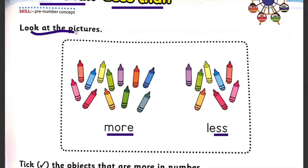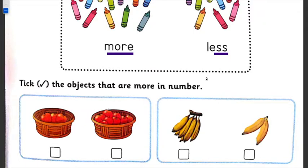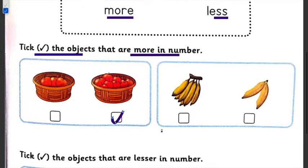Look at the pictures first — more, less. If you can count, it will be fine, but you will find more and less. Now you just have to check which is more and which is less. You have to read the statement: tick the objects that are more in number. Here we have three apples — 1, 2, 3, 4, 5, 6, 7, 8 — so we will click here, students. More means more. Now for the next one, you will see bananas — what is more here and less here — so we will click here for more.